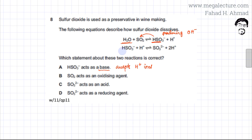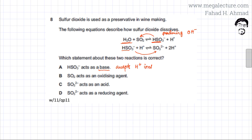However, in the other reaction, HSO3⁻ is acting as an acid. In the second reaction, HSO3⁻ produces an additional H⁺ — initially there was one H⁺, now there are two H⁺ ions. So HSO3⁻ acts as an acid in the second reaction. Statement A — that HSO3⁻ acts as a base — is correct for one reaction but not the other.